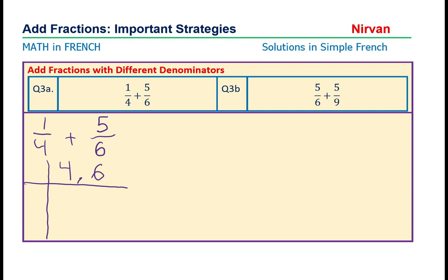Maintenant, nous pouvons chercher deux. Deux fois quoi est quatre? Deux fois deux et quatre. Et deux fois trois égale six. C'est très confusant.